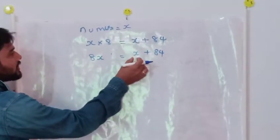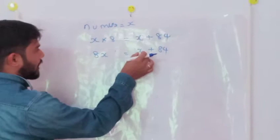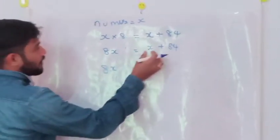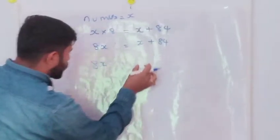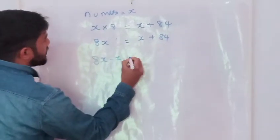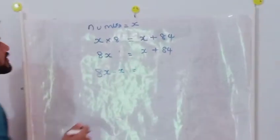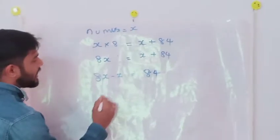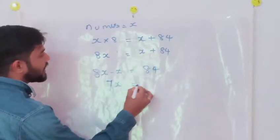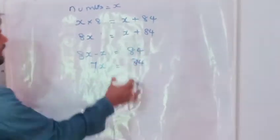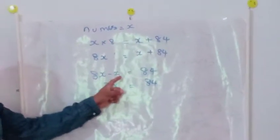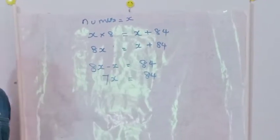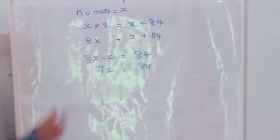I am taking this x, which means 1x, from the right-hand side to the left-hand side. So 8x, and this x coming to the left-hand side becomes minus x — the sign will change. The remaining thing is 84. So 8x minus x equals 84. 8x minus 1x: 8 minus 1 gives 7x. The answer is 7x equals 84.